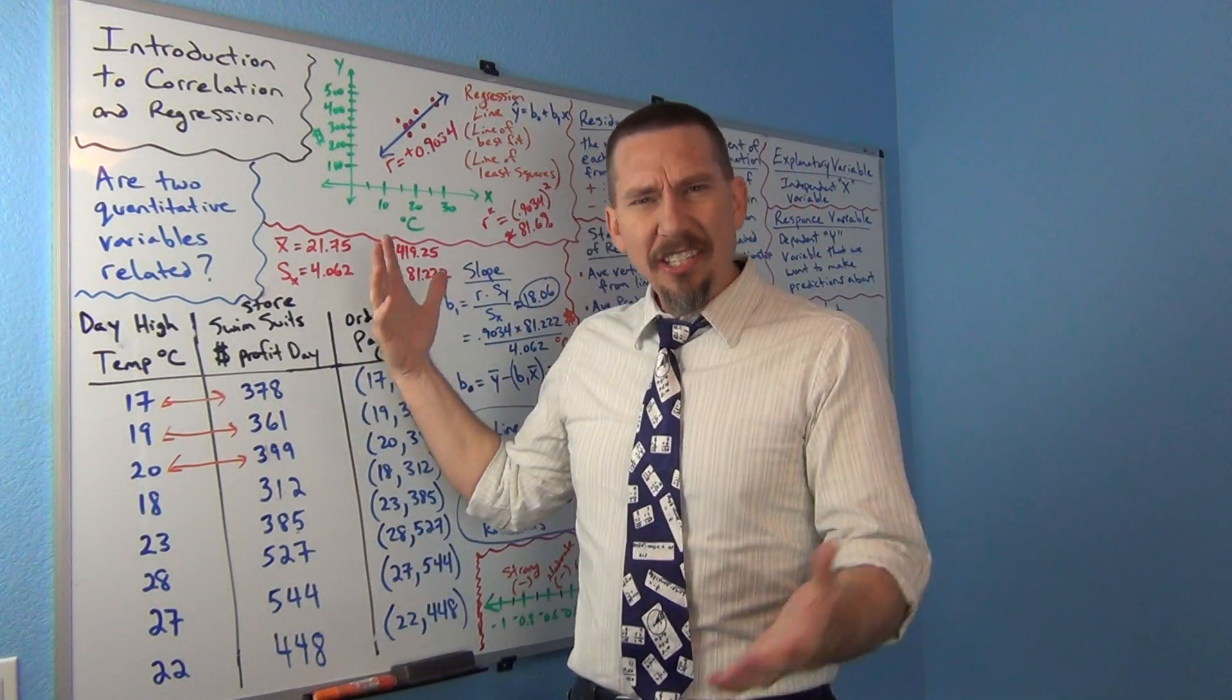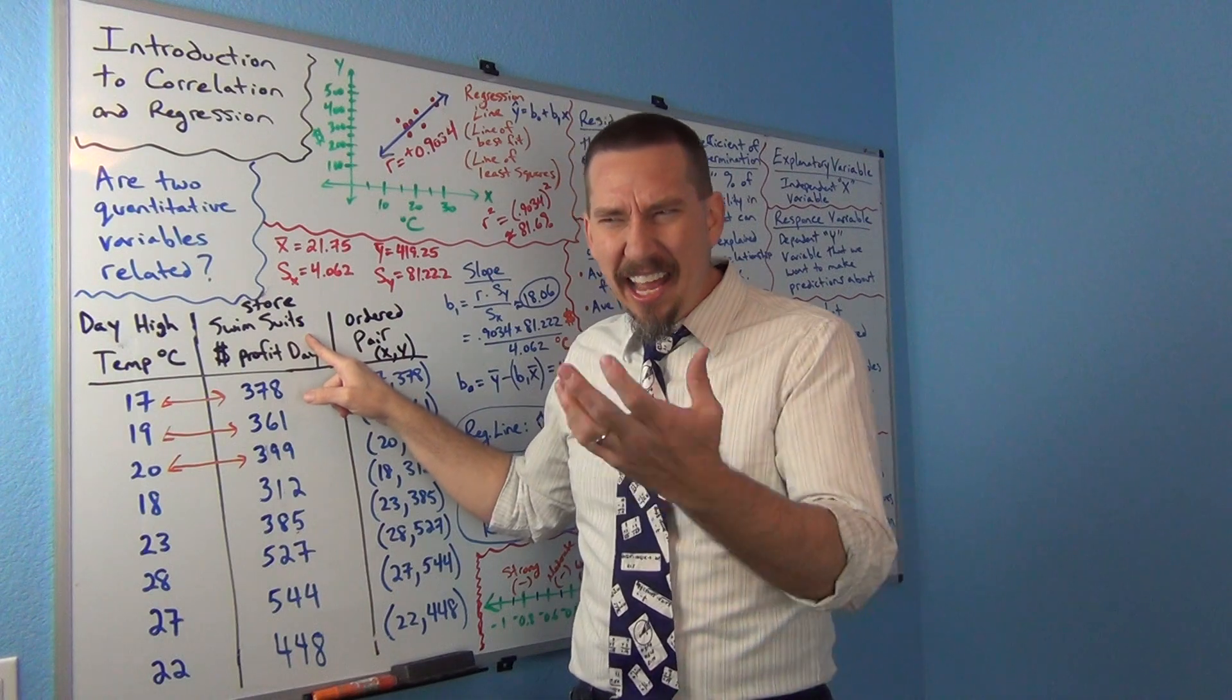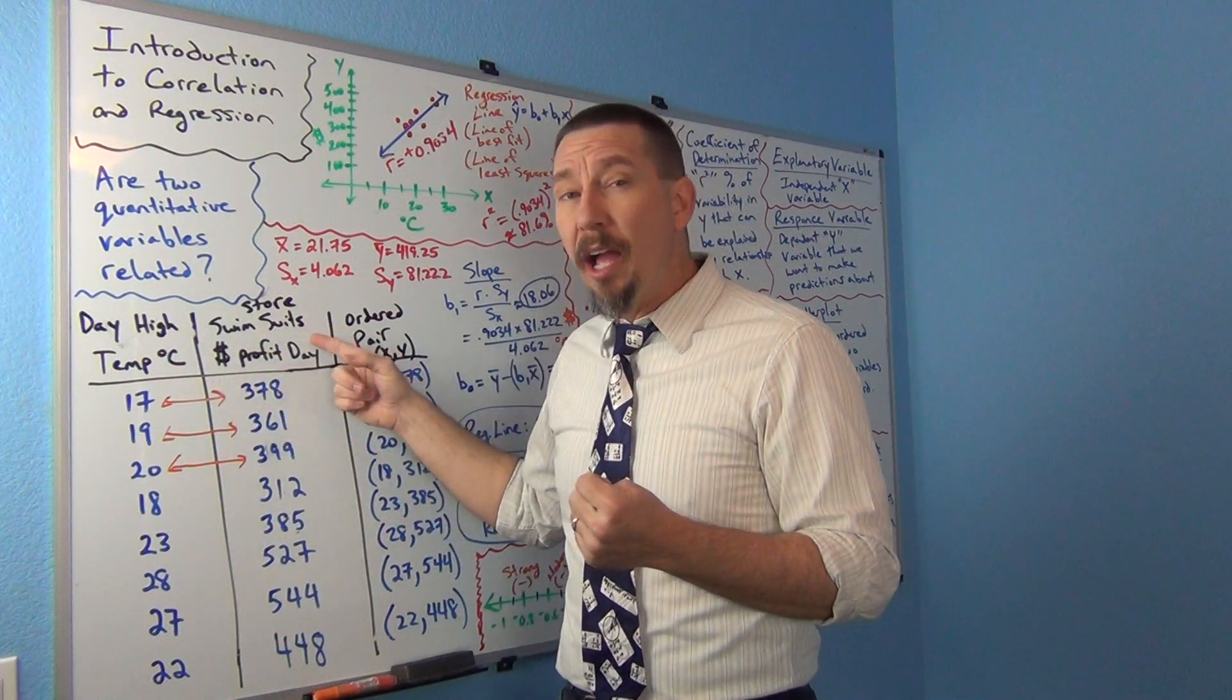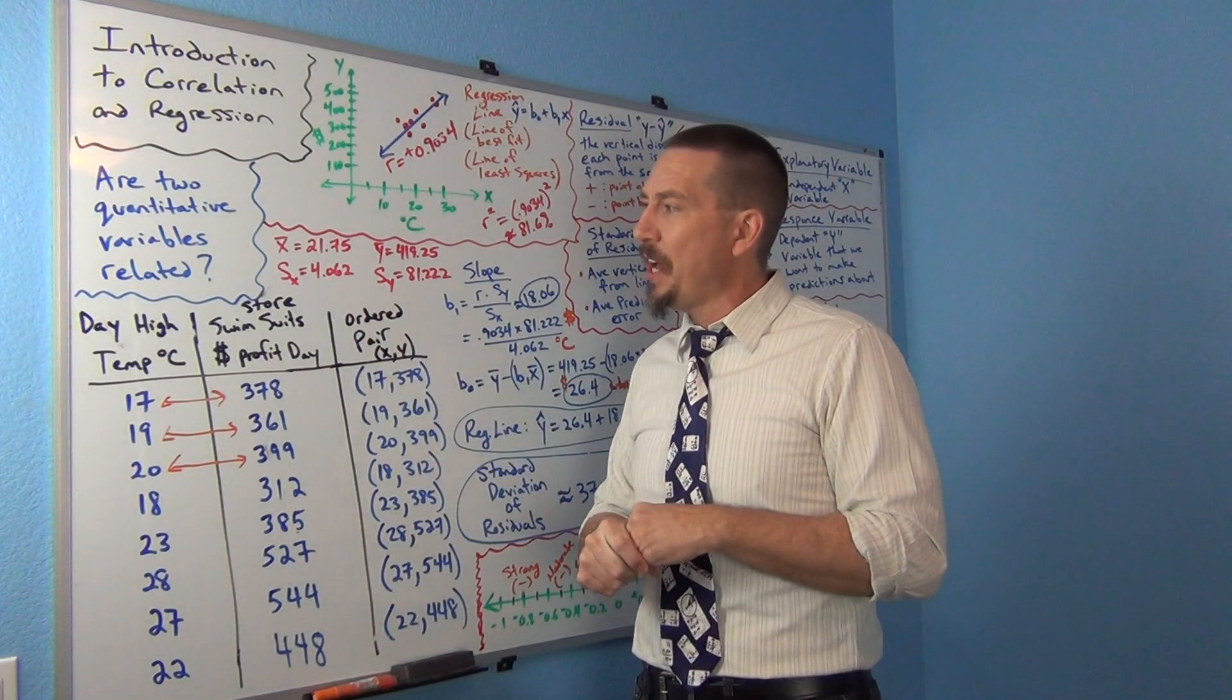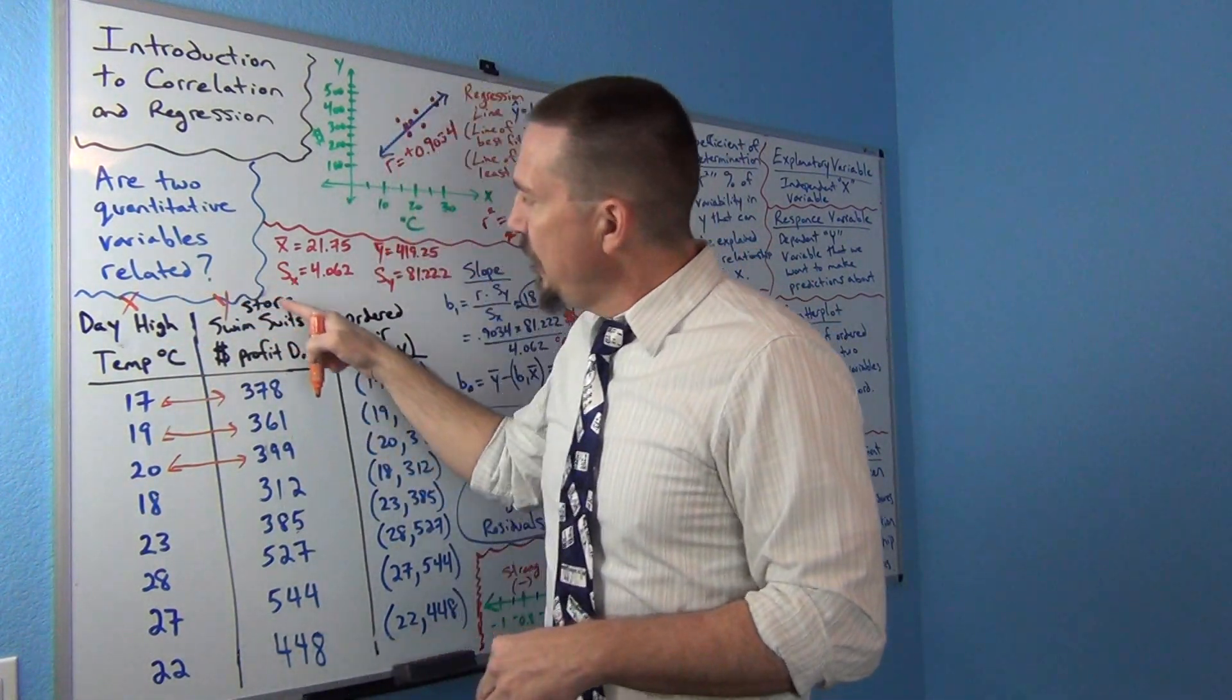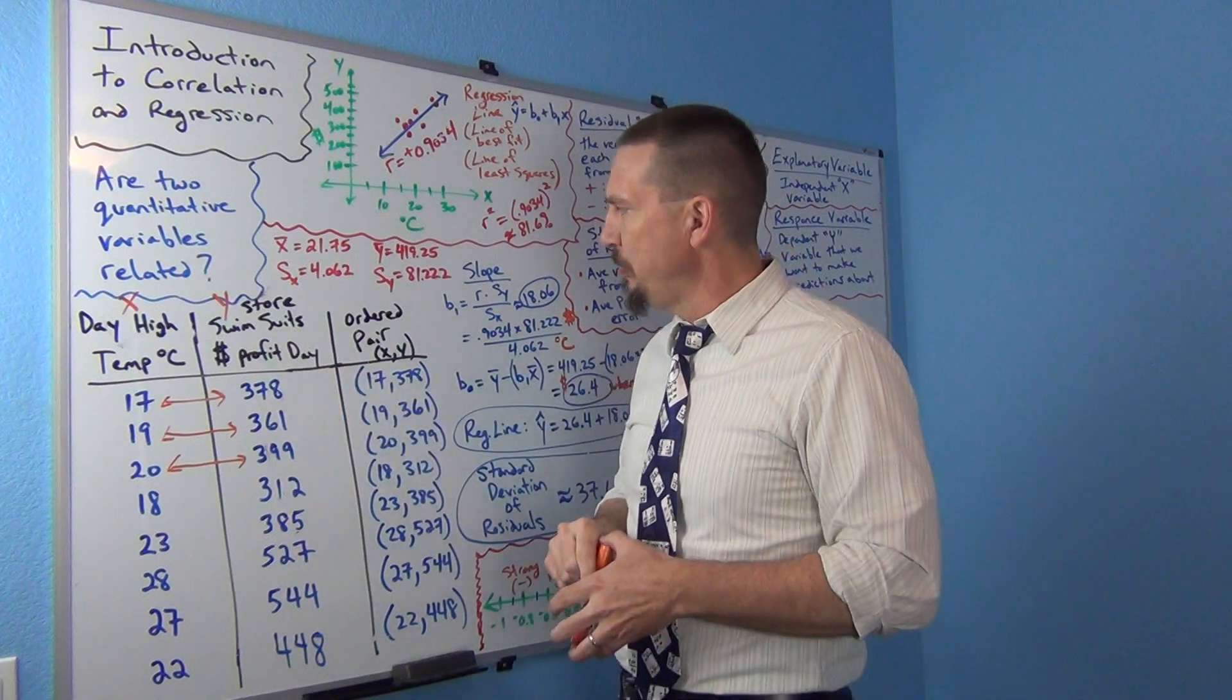Let me ask you a question. Would I want to predict the temperature on a given day based on my profits? Doesn't that sound kind of weird? Like if I knew my profits, could I predict what the temperature is going to be? Is that something I really want to know? That doesn't sound right. But maybe based on the temperature, could I predict what my profits might be? Now that sounds a little more reasonable, especially for the people running the store, to get an idea of how temperature relates. So in this problem, I think I want to make the temperature x, the explanatory variable, and y is going to be my swimsuit profits per day. Because that's the one I really want to make predictions about. So that's a good way to think about it - which variable do you really want to make predictions about? Which is the focus?